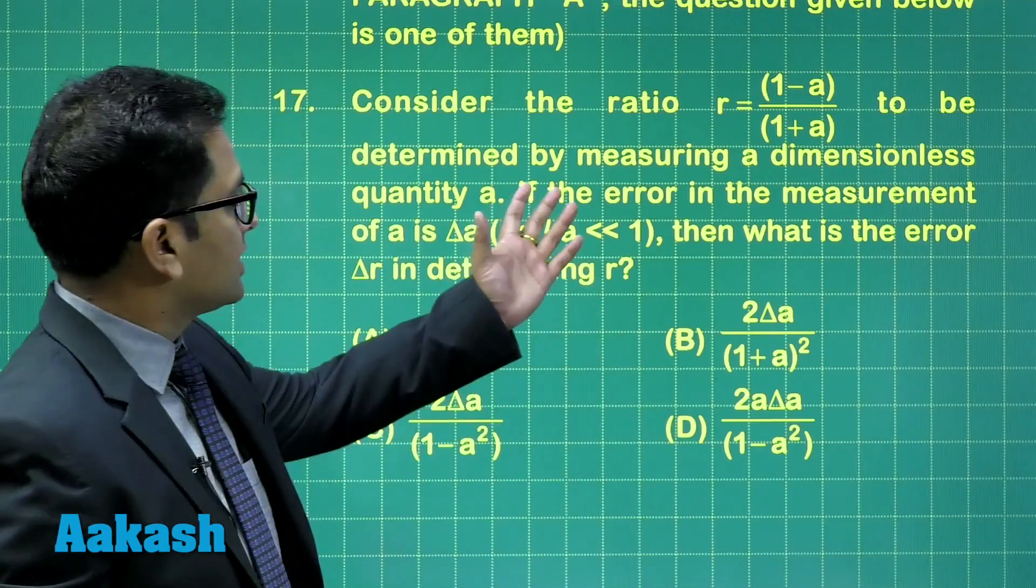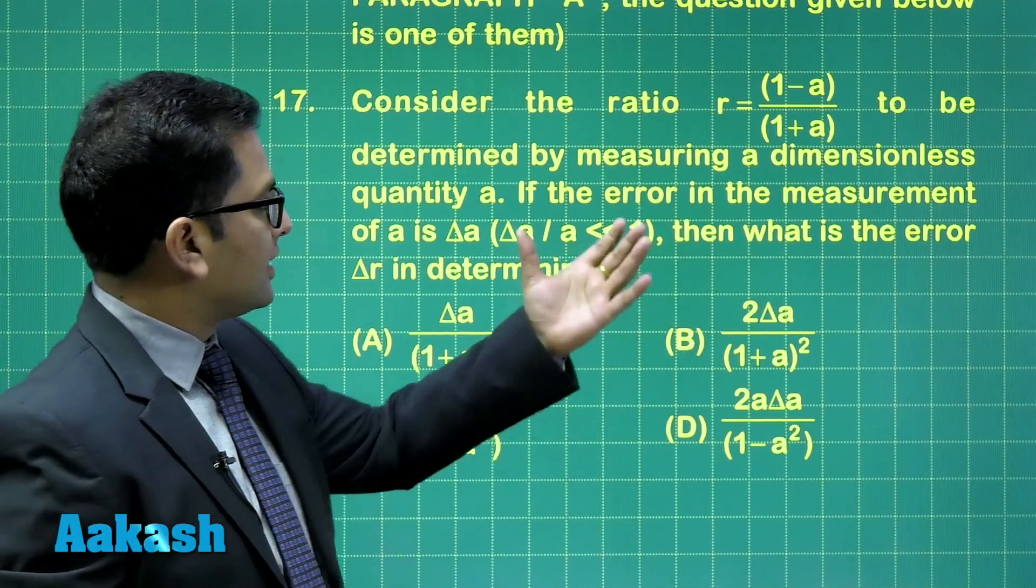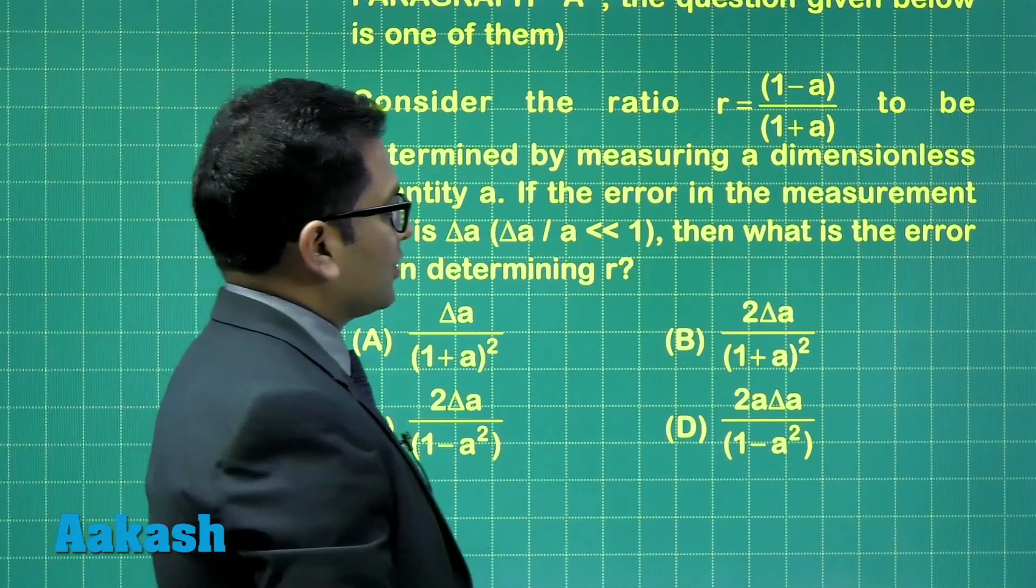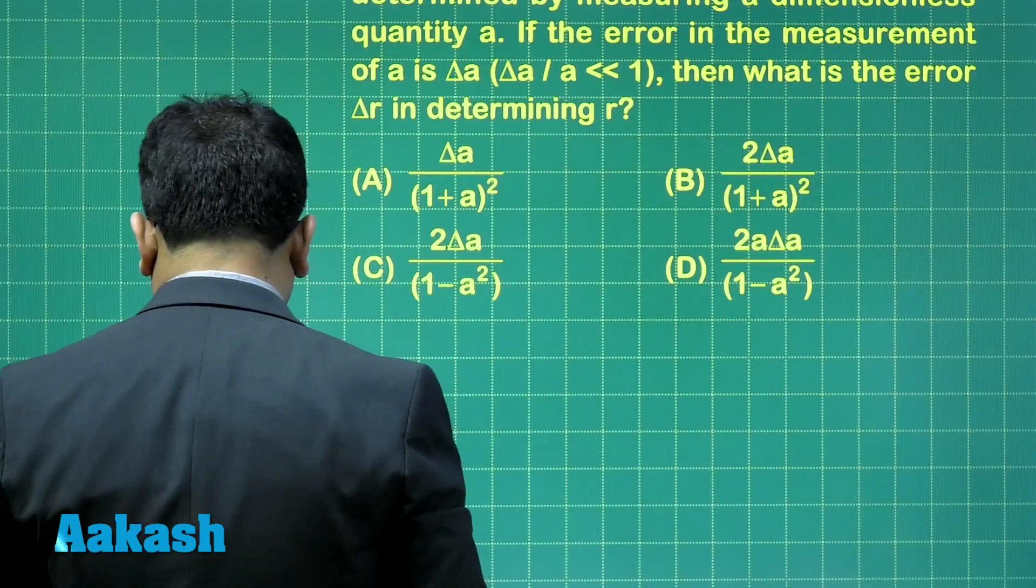There is a quantity which is r = (1 minus a) by (1 plus a), and we need to calculate the error in r. In other words, delta r. That's what I need to calculate. So here, let's see straightforward according to the options given.